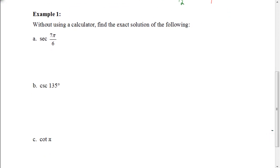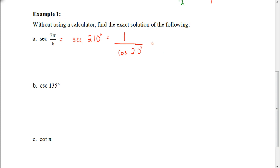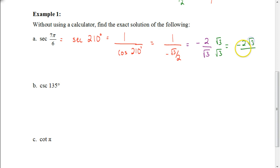Here we have the secant of 7π/6. We can convert this to degrees: 7 times 180 divided by 6 gives us 210 degrees, so this is the same as the secant of 210 degrees. That's 1 over the cosine of 210 degrees. We know the cosine of 210 degrees is −√3/2, so our answer is the reciprocal: −2/√3. Since we can't leave a square root in the denominator, we multiply numerator and denominator by √3, giving us −2√3/3.